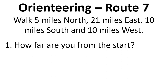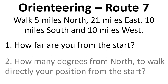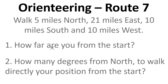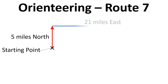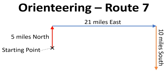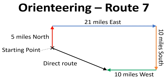We want to know how far we are from the start, and we want to know how many degrees from north to walk directly to the position from the starting point. So we're going to draw a diagram where we've got a starting point, and then we've gone 5 miles north, 21 miles east, 10 miles south, and 10 miles west. To go directly from the starting point to the finish, we have an arrow here that shows that.